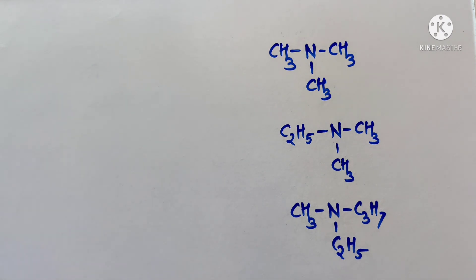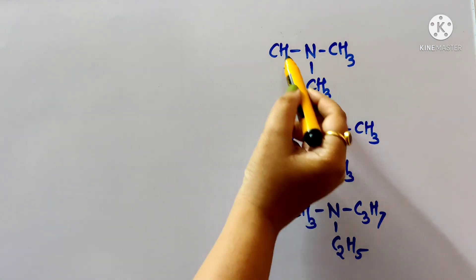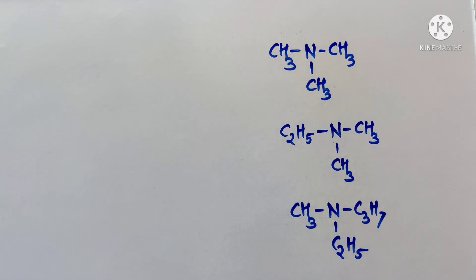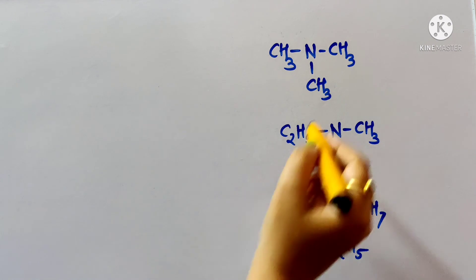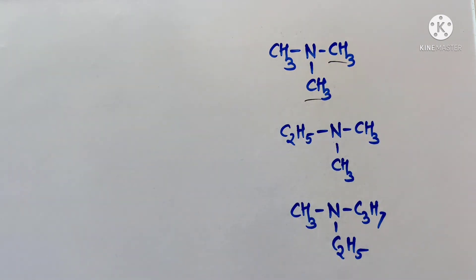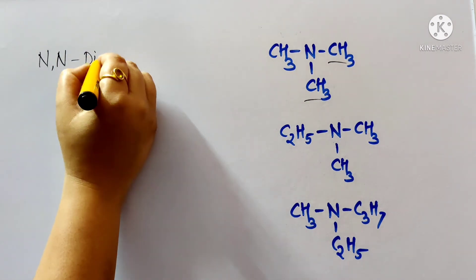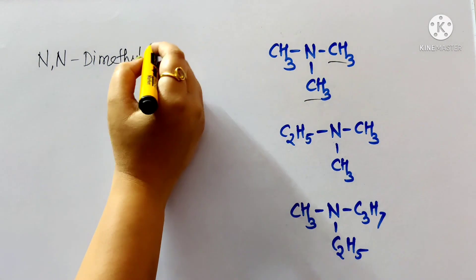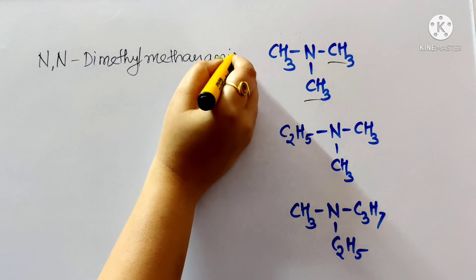For tertiary amines, two of the three alkyl groups are considered N-substituents and the longest chain is the parent. For trimethylamine, two methyl groups are N,N-substituents and the third is the parent (methanamine), giving IUPAC name N,N-dimethylmethanamine.